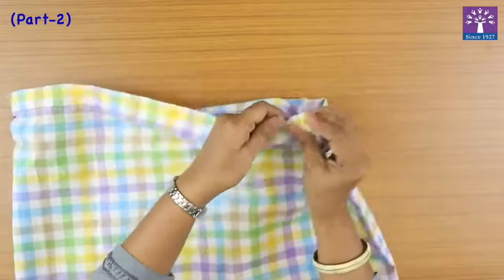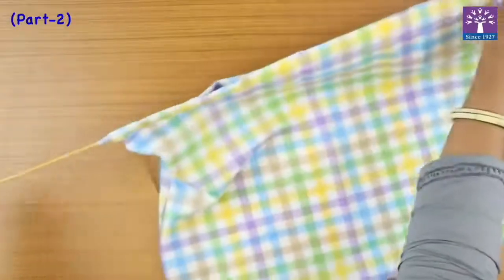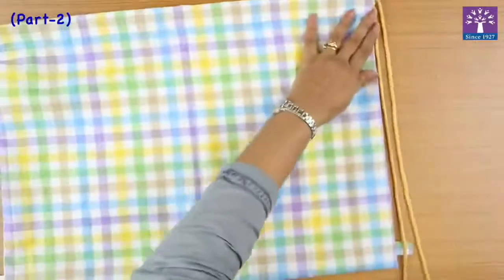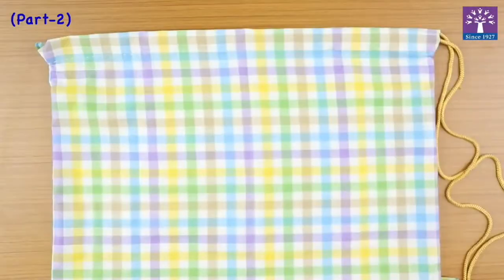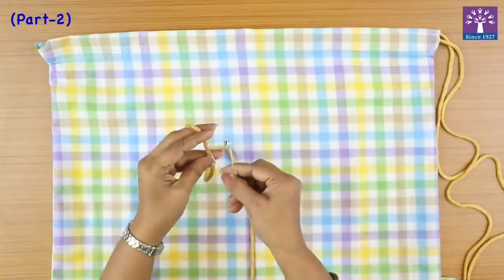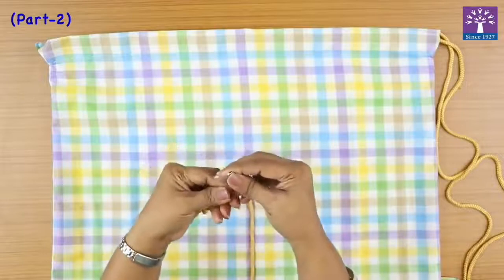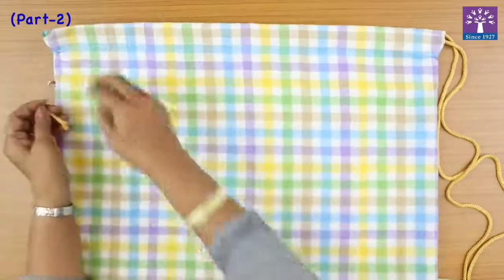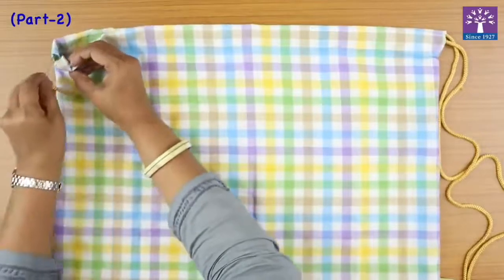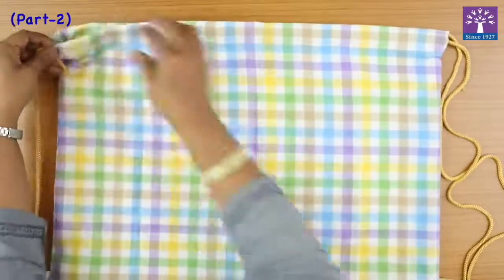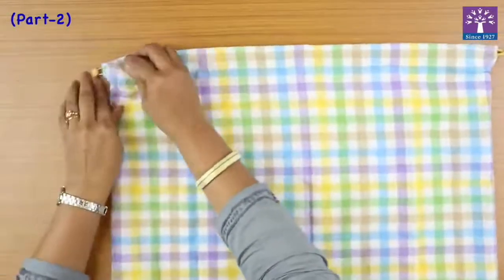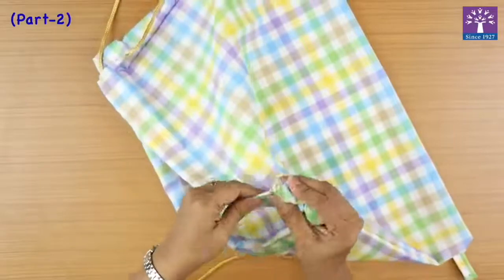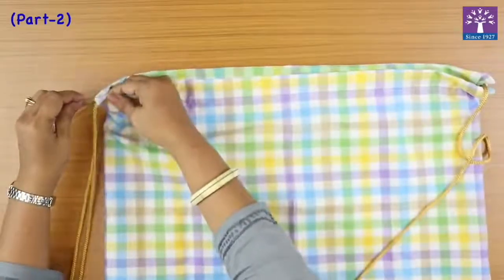Now we will pass it to the second side, turn it around and continue to pull it so that it becomes equal. Now we will take the second string and again fix a safety pin. This time we are going to start slipping the cord from the left hand side. That's the reason why we had kept a bigger gap so that two cords can pass. Now we will continue in the next side.